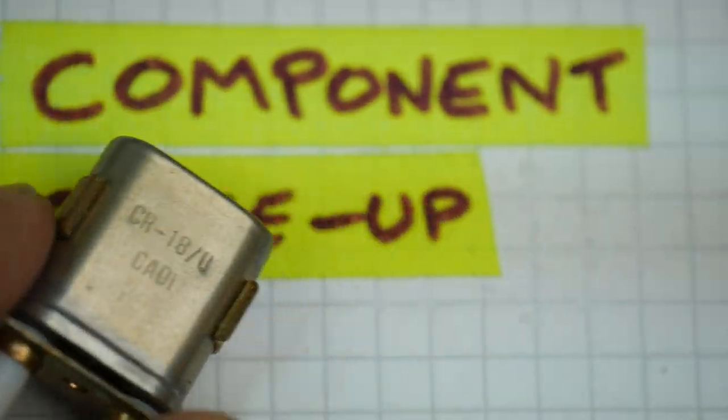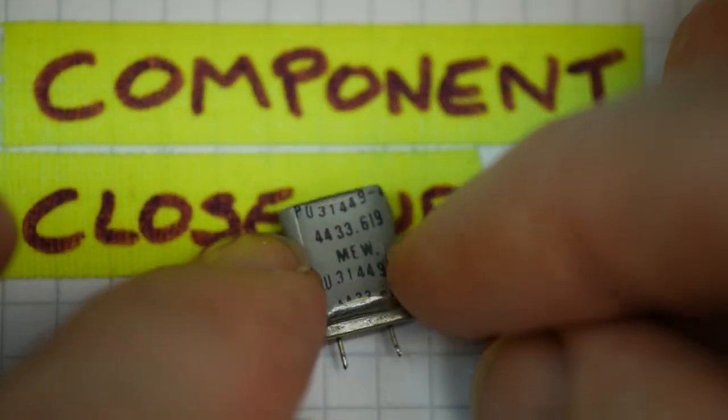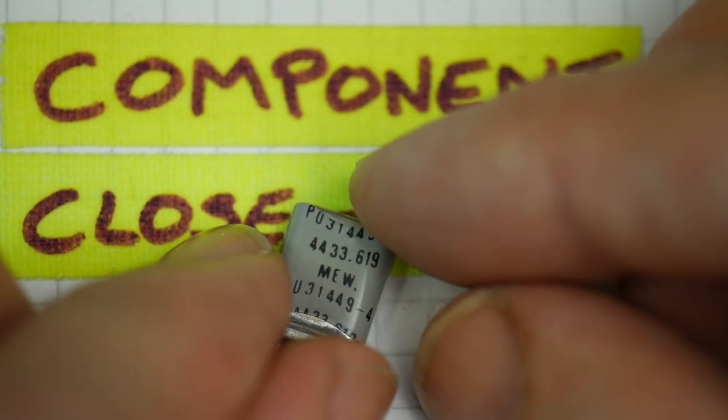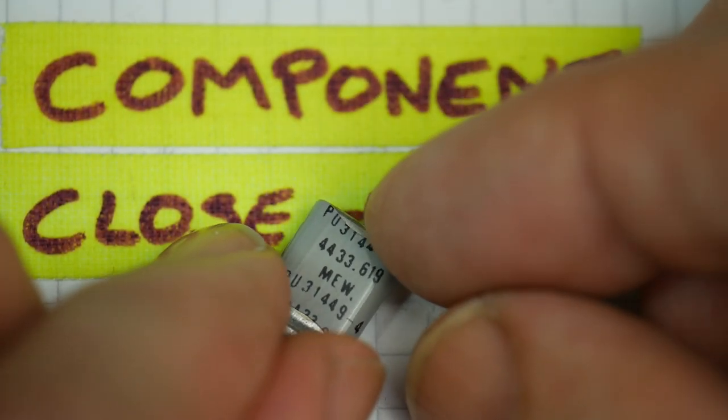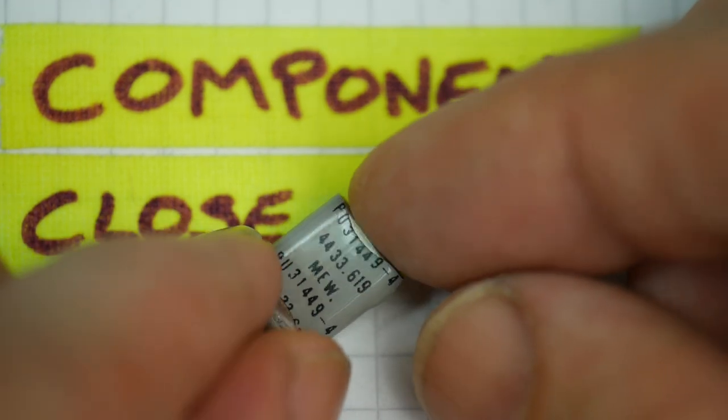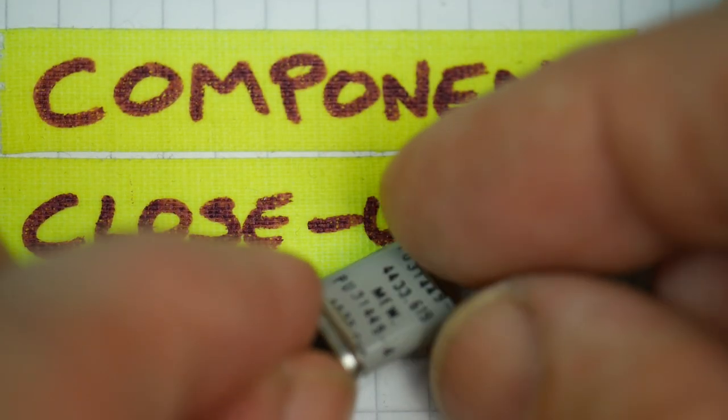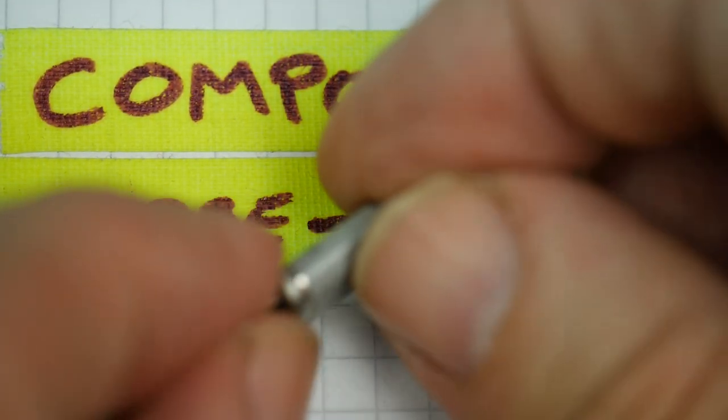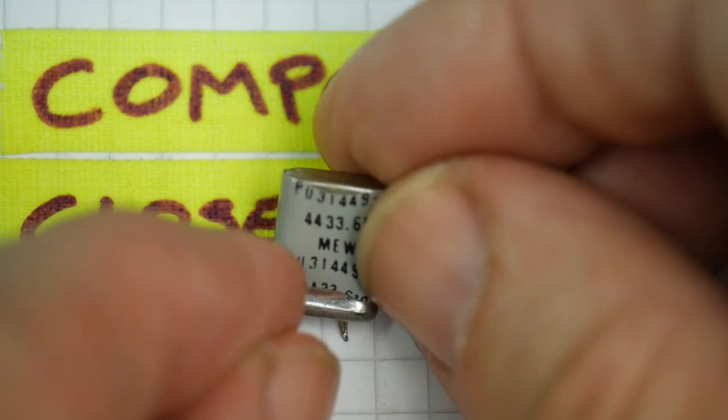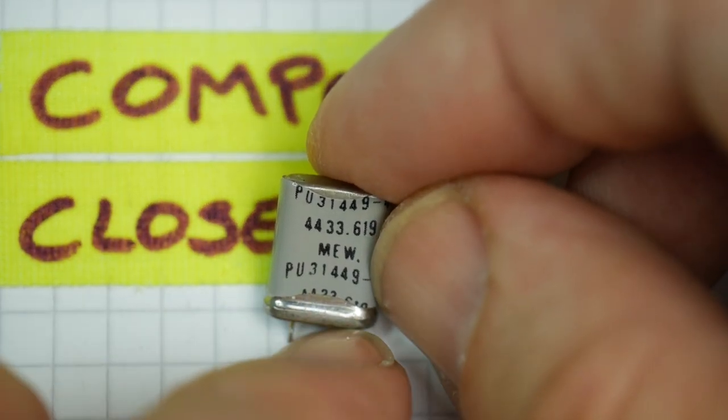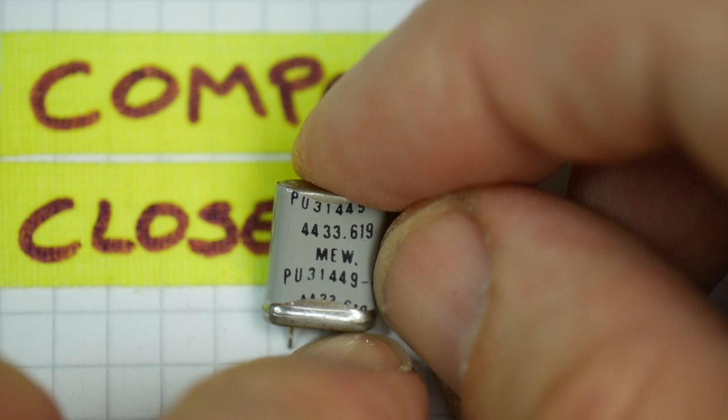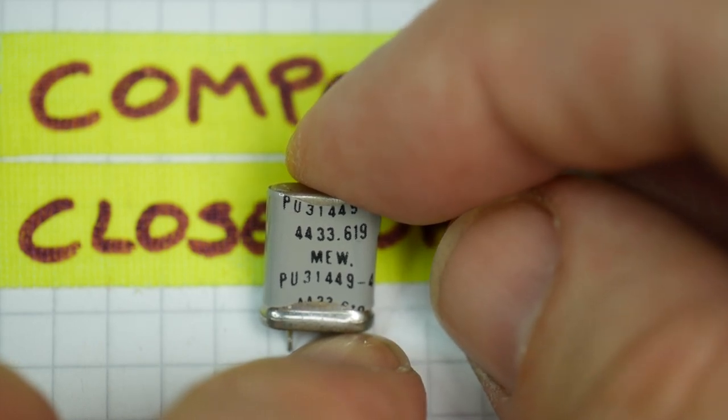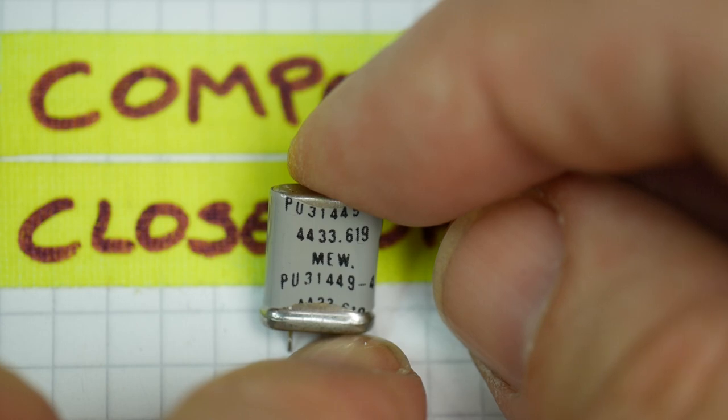They got smaller, as everything did. So this quartz crystal here is a 4.433619 megahertz crystal. This is probably out of a PAL color television set or video recorder. So this is a quartz crystal, maybe from the 80s. Again, can't see a date code on that. So that's a fairly typical sort of size from an old TV or video recorder.